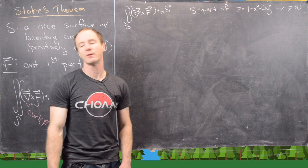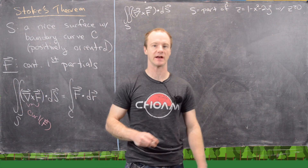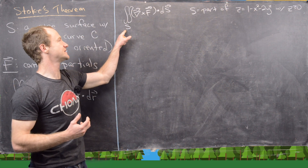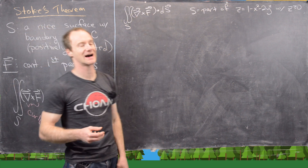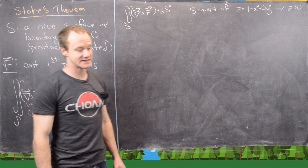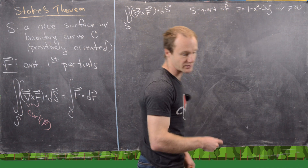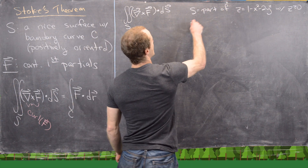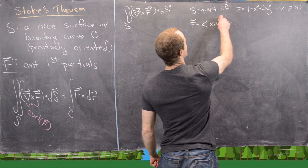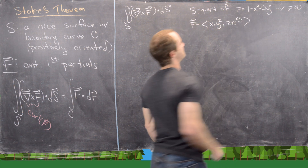For our next example, we work in the opposite direction — we want to calculate a surface integral by converting it to a line integral using Stokes' theorem. We want the surface integral of curl F dot dS, where S is the part of a paraboloid above the plane z = 0, i.e., above the xy-plane. Our vector field in this case is F = (x, y², z·e^(xy)).